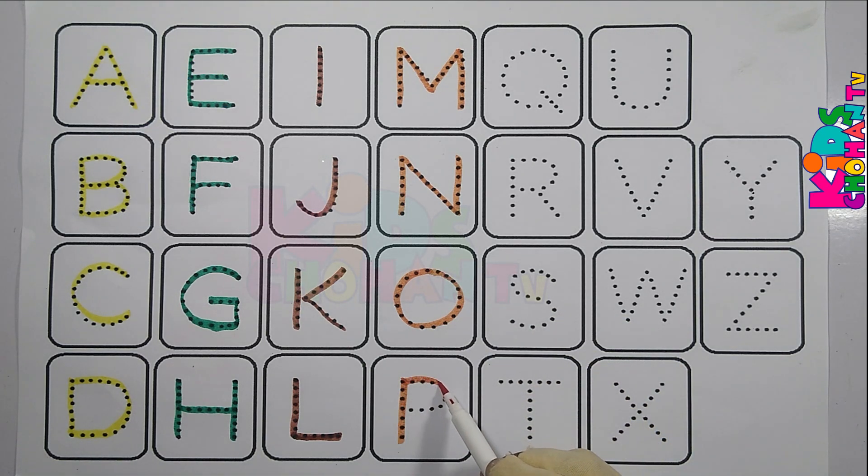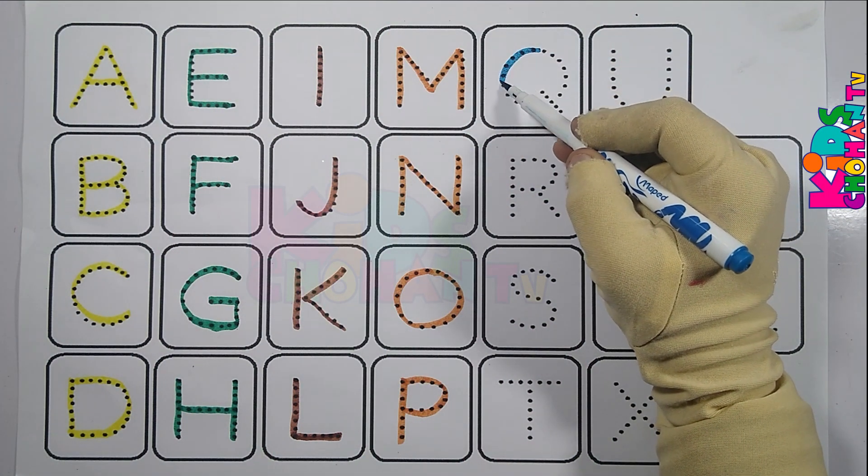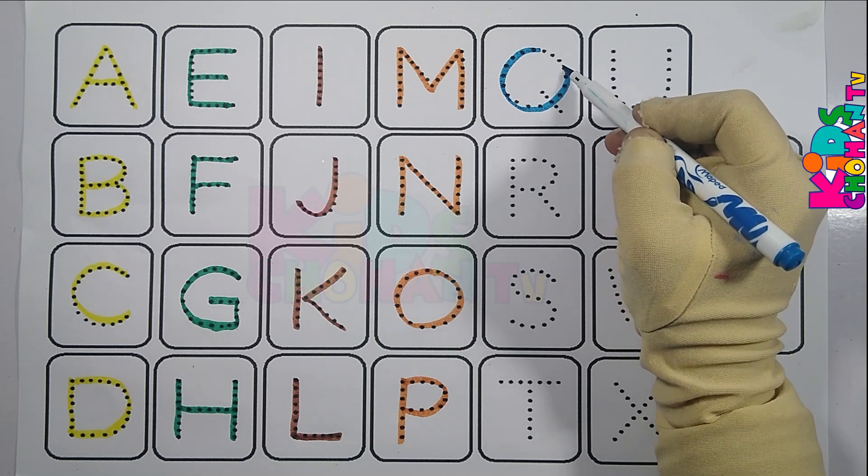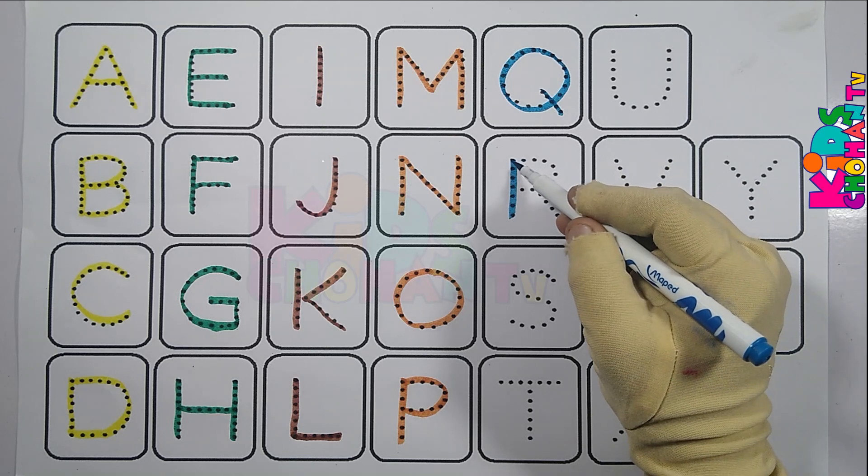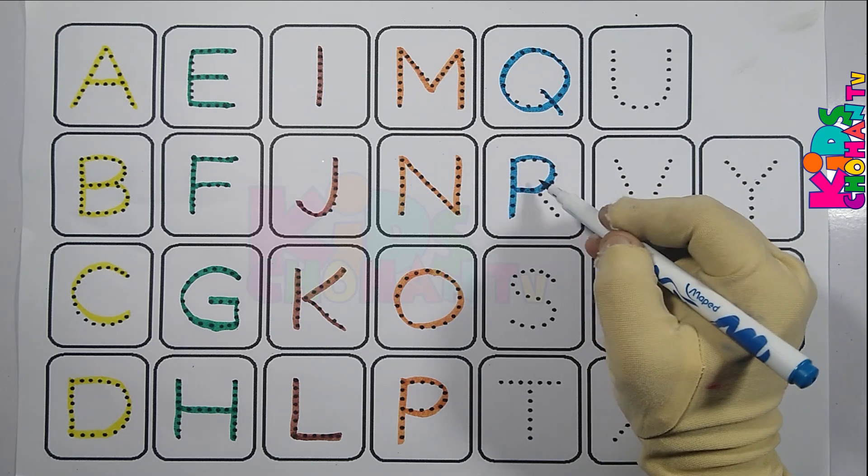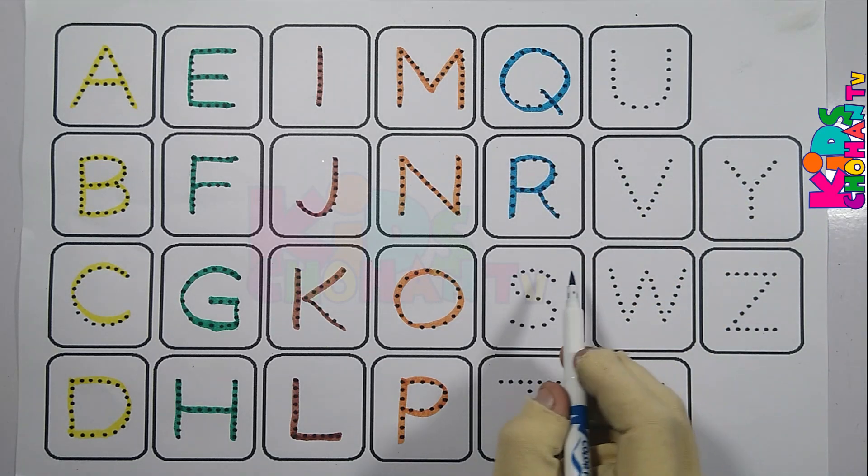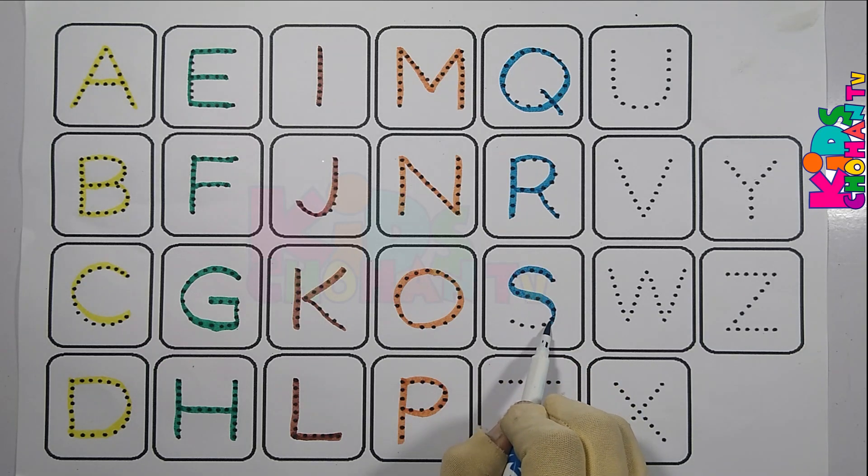B, B for better. Q, U for queen. R, R for rabbit. X, X, Y, and Z. Now I know my ABCs.